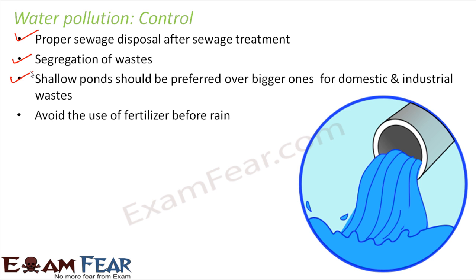We should avoid the use of fertilizer before rain. Fertilizers used in agriculture to improve crop productivity have extremely high content of phosphates and nitrates. When we apply fertilizer to the field and immediately after that it rains, the fertilizer gets washed away and pollutes the nearby water body — the nearby pond or river. Therefore, we should always avoid using fertilizer before rain, or never irrigate the field immediately after applying fertilizers.